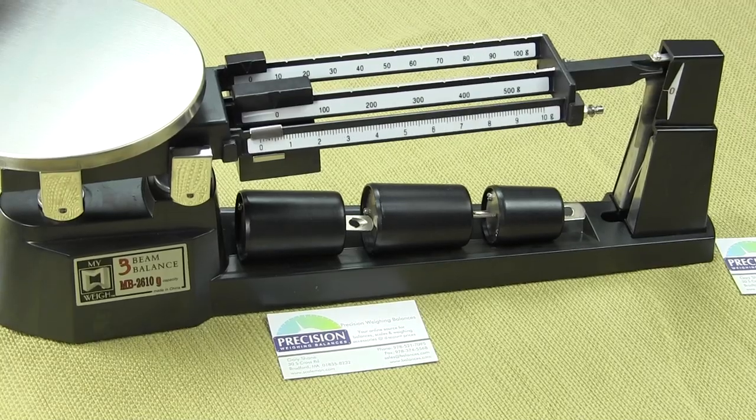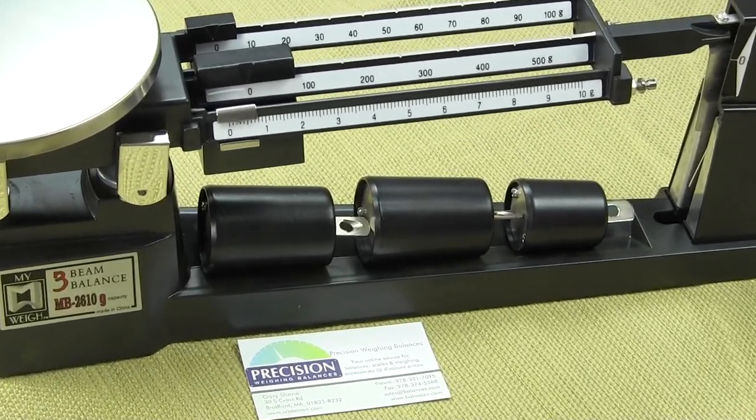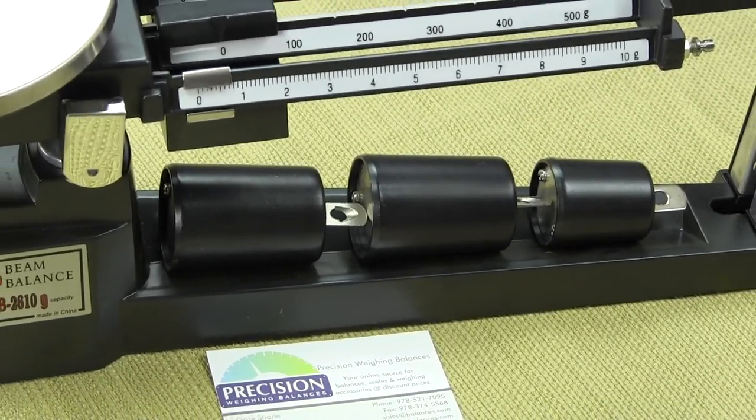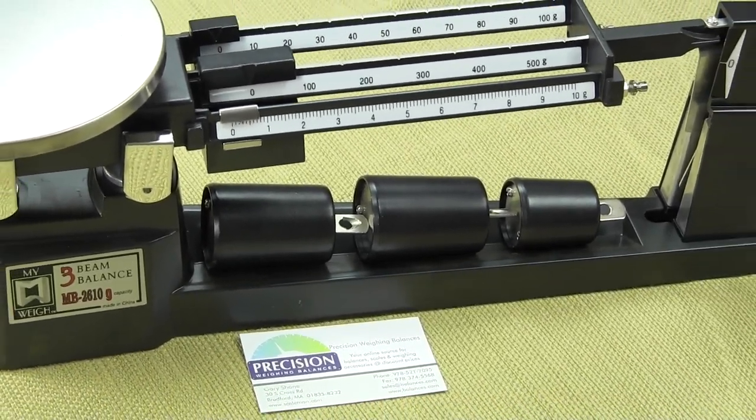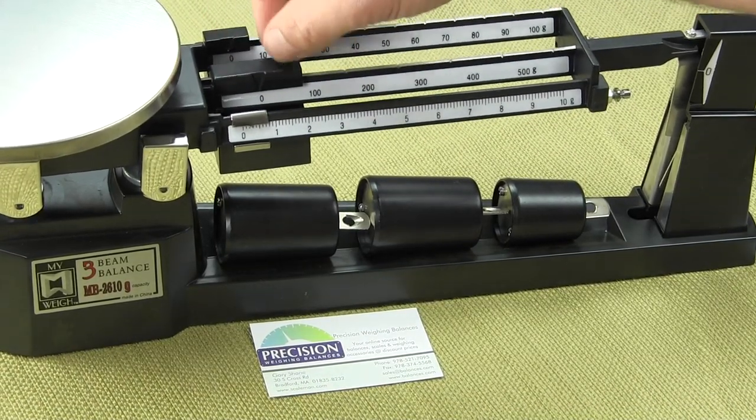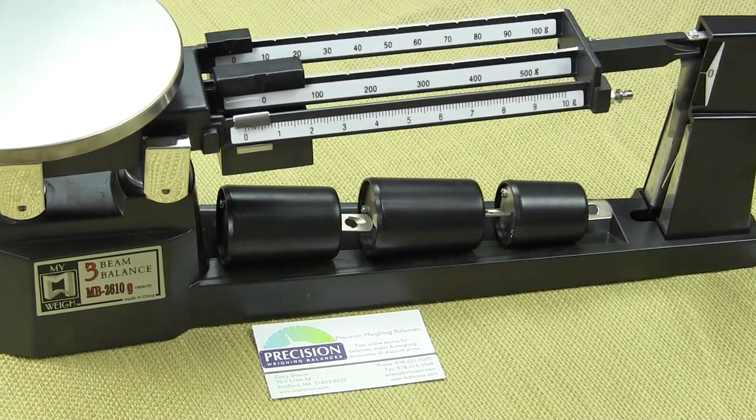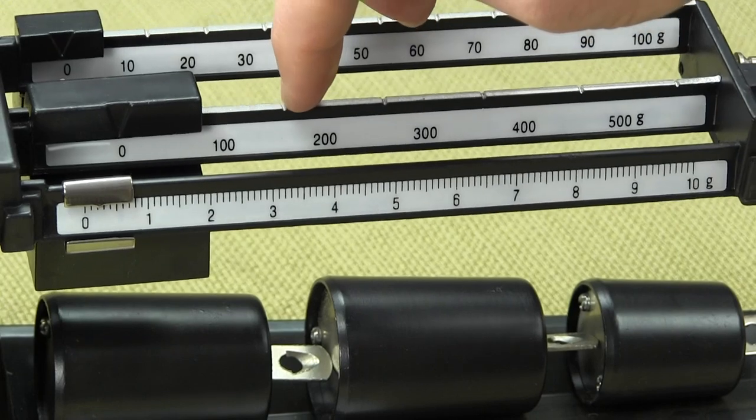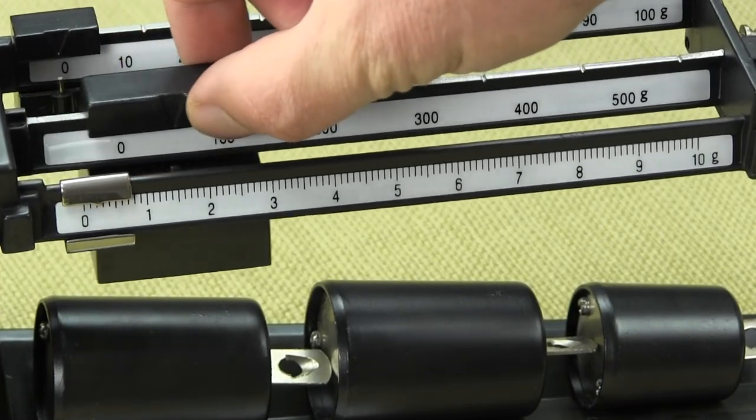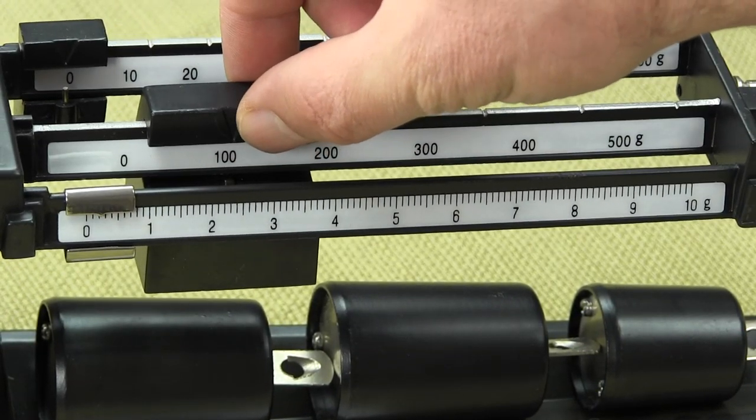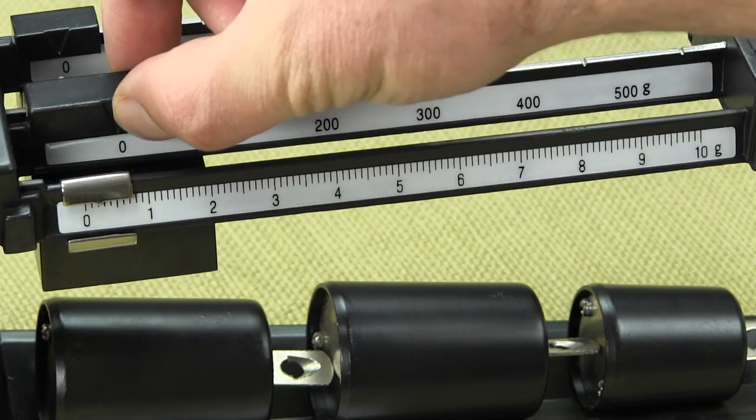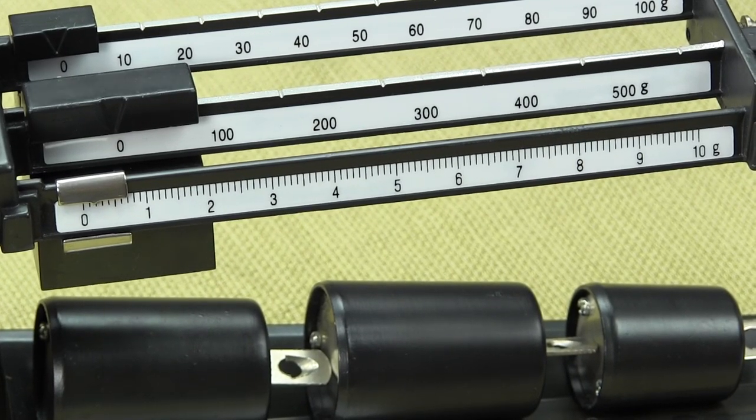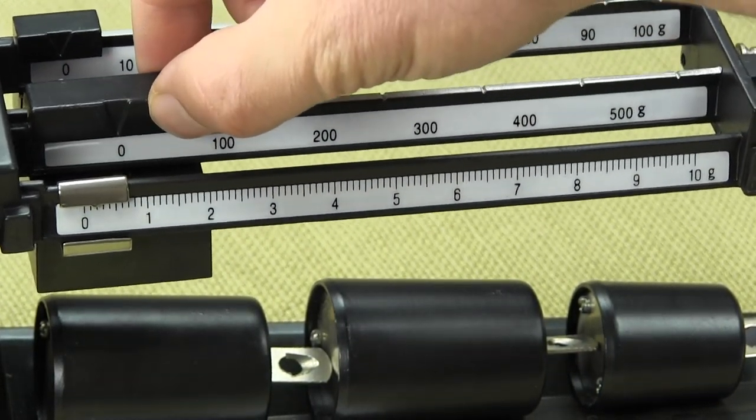You'll notice on the three beam balance there are notches on the beam itself that the rider is dropped into. There's a notch right here, so when you slide the rider down you want to make sure it's locked into position. This is how you weigh on the three beam balance.